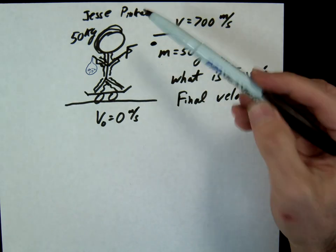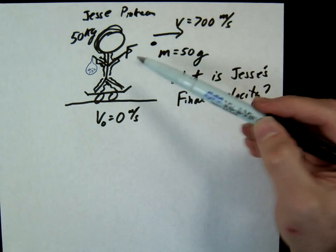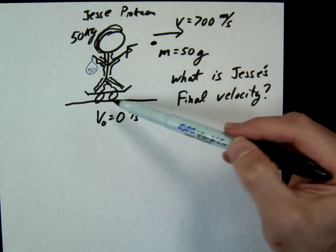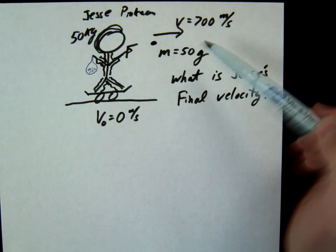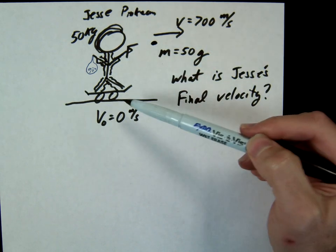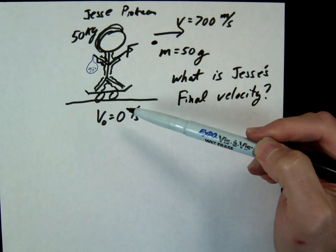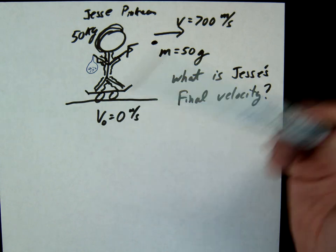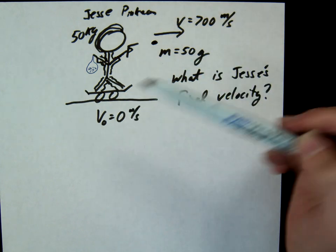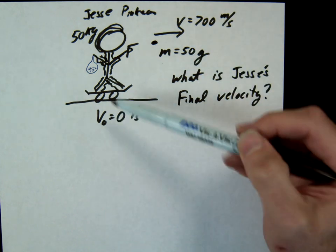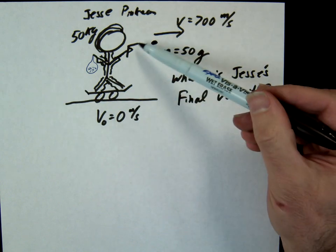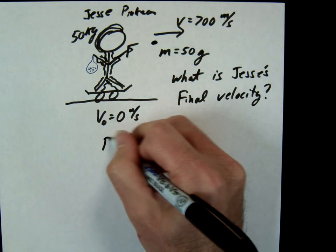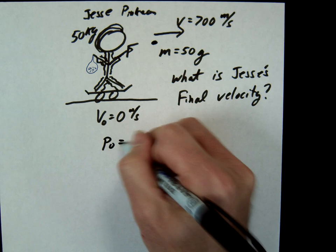Let's set this one up. We have our skater here. The skater is going to shoot a bullet. Why am I putting him on a skateboard? So we can kind of ignore friction. We put him on the skateboard to ignore friction. So he's going to go ahead and shoot his bullet, and we're going to use conservation of momentum.